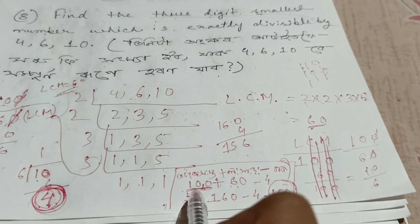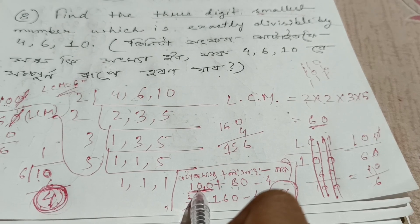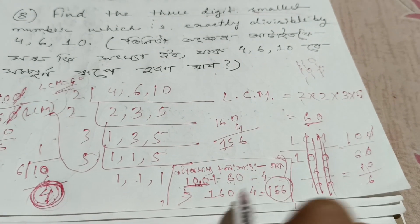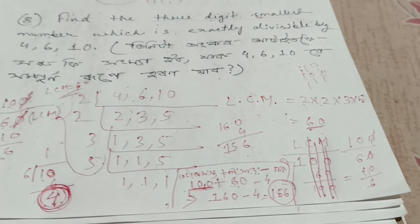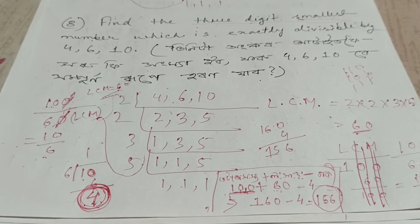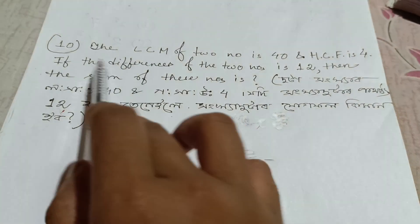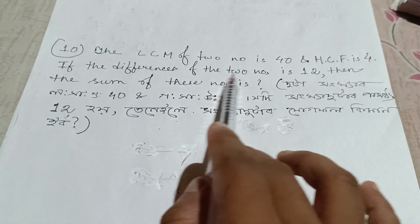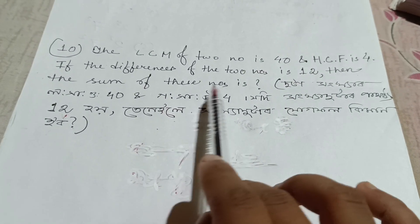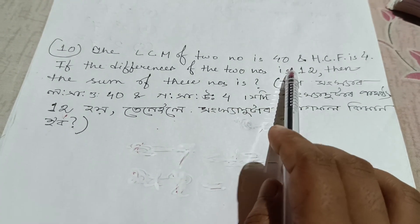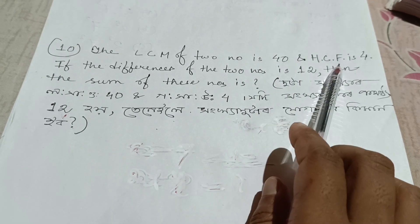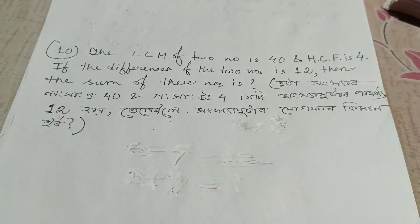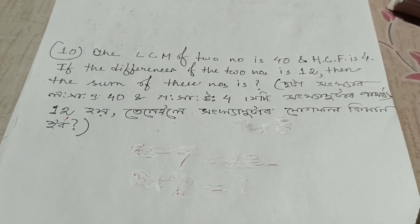So let's see — around 100 to 3, looks like minus. That would be part of the answer. You can see the sum of two numbers is 40, and if the difference of two numbers is 12, then the sum of these numbers is...